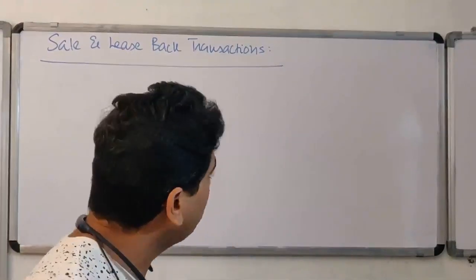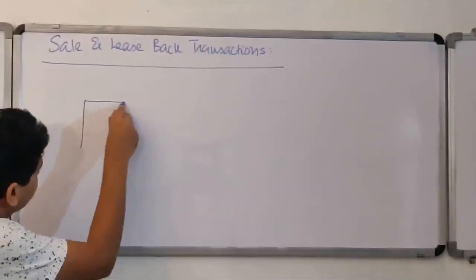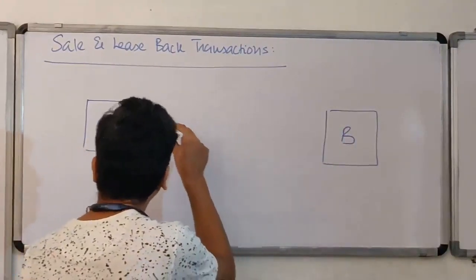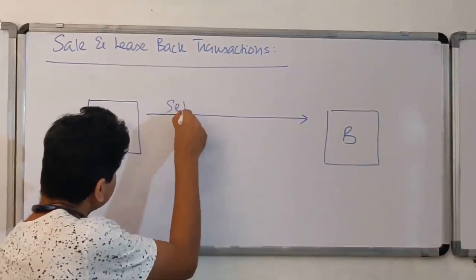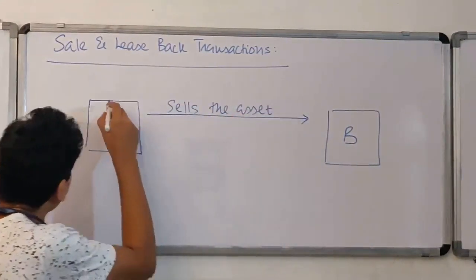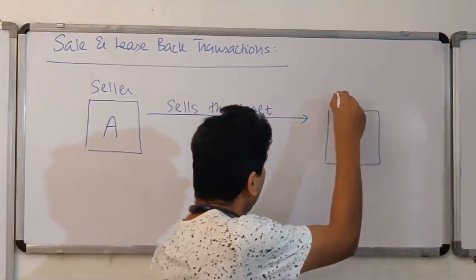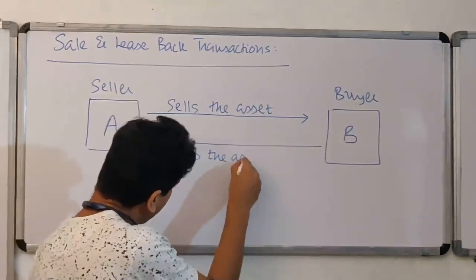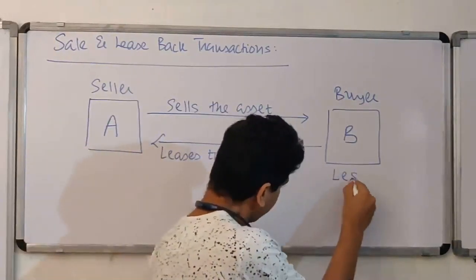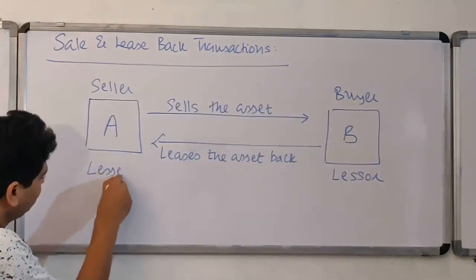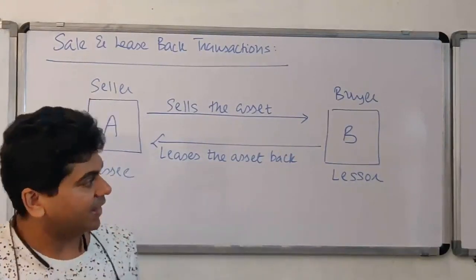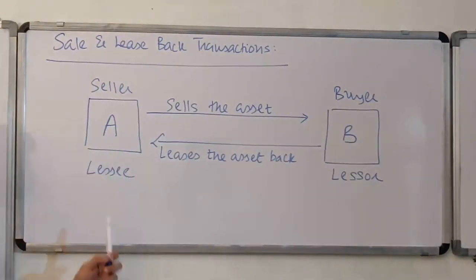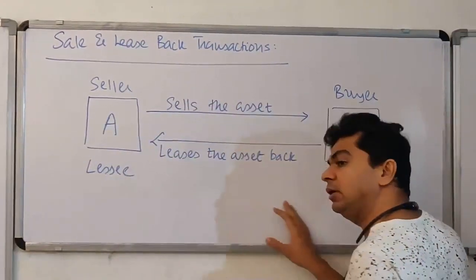A sale and leaseback transaction is one where a seller will later on become a lessee and the buyer will later on become a lessor. We have two parties: Party A and Party B. First, A sells the asset — so A is the seller and B is the buyer. Then B leases the asset back, so now B has become the lessor and A has become the lessee.